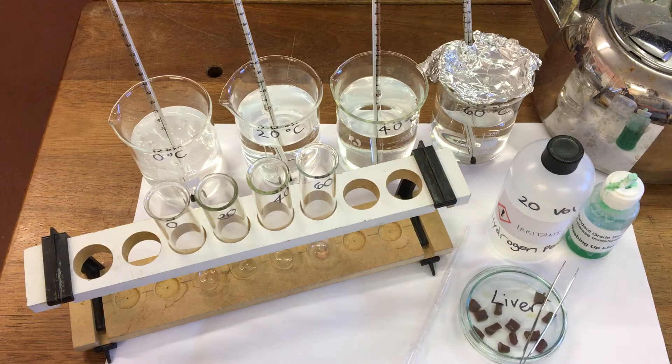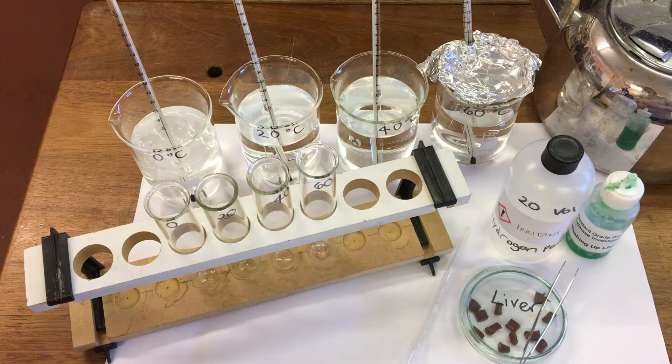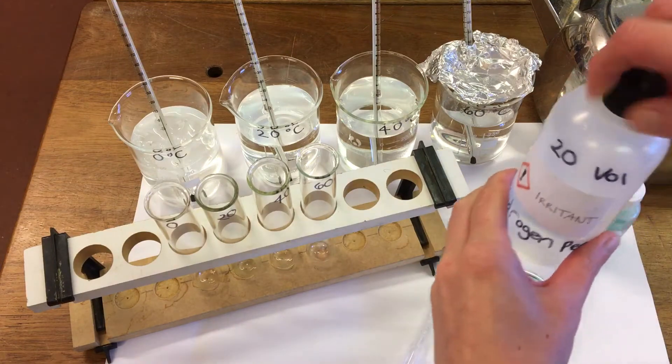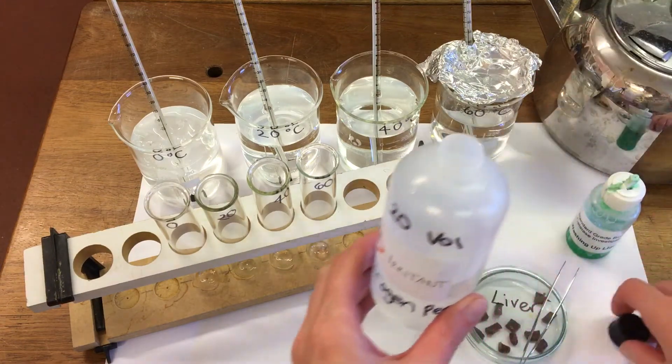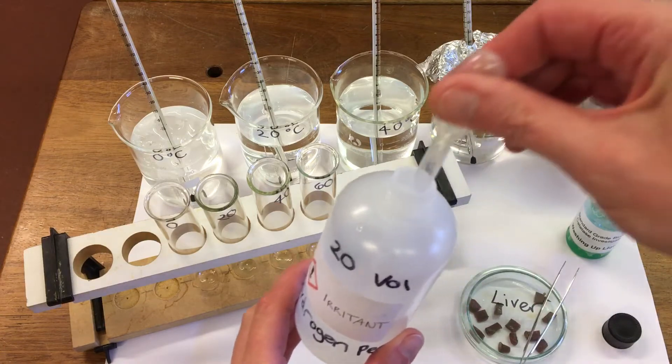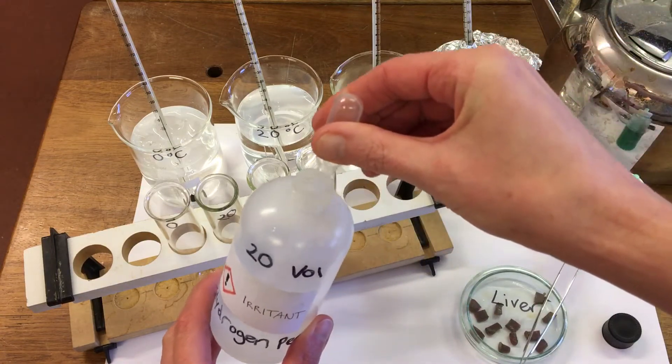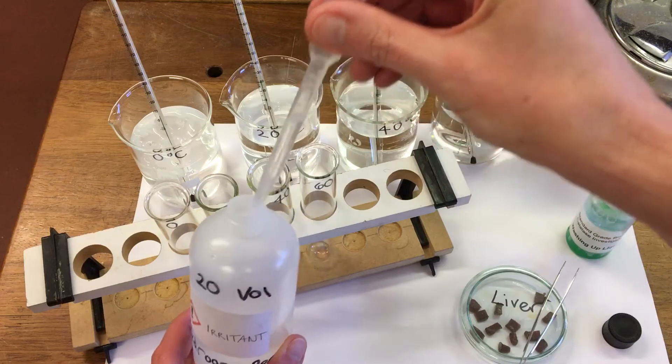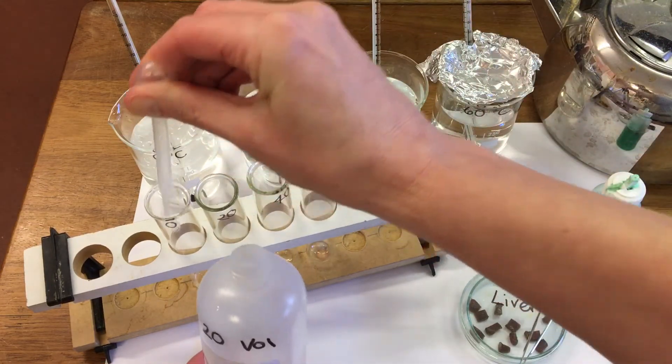So first of all I'm going to take our hydrogen peroxide and I'm going to put it at four different temperatures. We're using 20-volume hydrogen peroxide and I'm going to take two mLs into each of our test tubes.